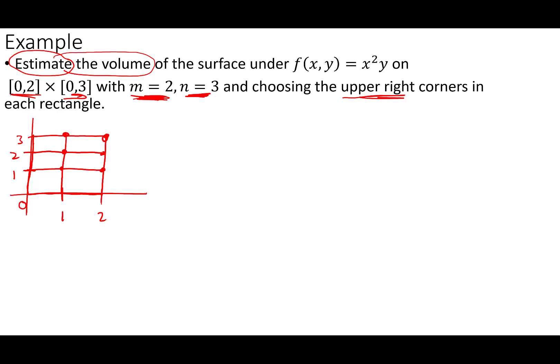So for this point right here, that's the point (1,3). This point here is (2,3). This is (2,2). (2,1). (1,1). Let's see. This is (1,2). There we go. Okay, so now I have my points all set out.